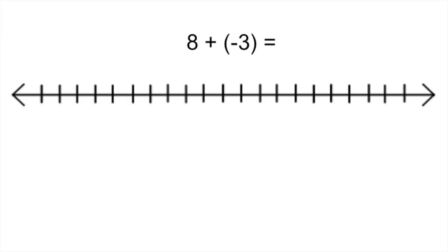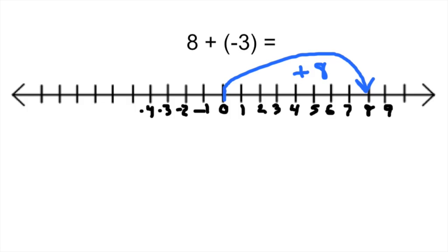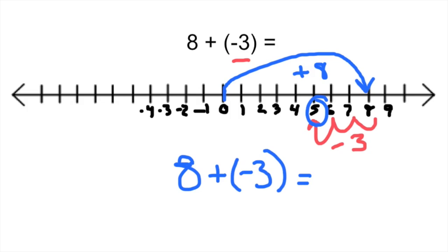One last one. 8 plus negative 3. Make your number line, and then remember you start at 0, go to the 8 because that's the first number, so we went up 8. And now we're adding negative 3. So should we go up or down? Well, negative 3 is negative. We should go to the left. We go to the left 3 from 8. That has us finish at 5. So 8 plus a negative 3 is equal to 5.